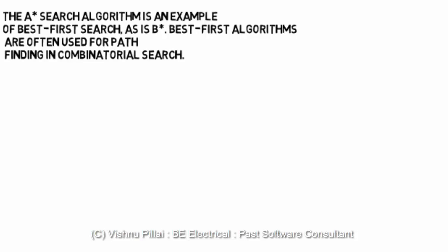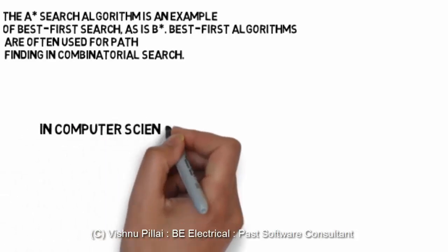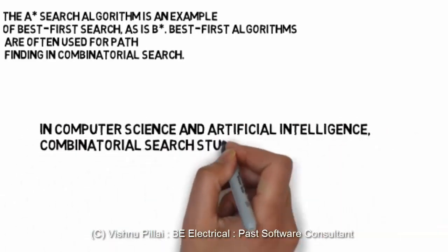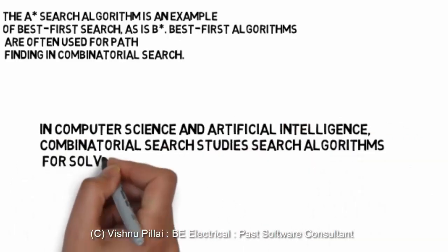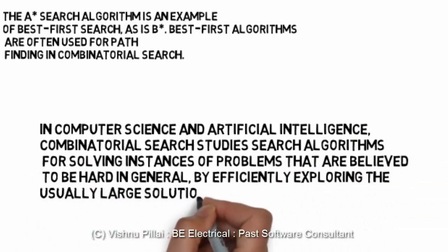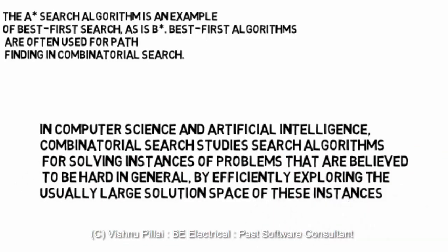Best first algorithms are often used for pathfinding in combinatorial search. In computer science and artificial intelligence, combinatorial search studies search algorithms for solving instances of problems that are believed to be hard in general by efficiently exploring the usually large solution space of these instances.